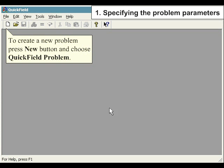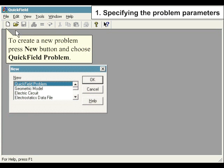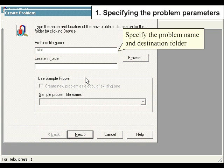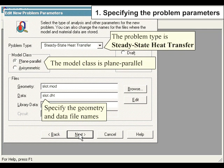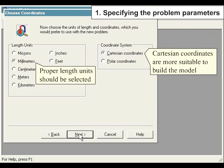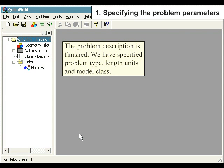To create a new problem, press New button and choose Quick Field Problem. Specify the problem name and destination folder. The problem type is Steady State Heat Transfer. The model class is plain parallel. Specify the geometry and data file names. Proper length units should be selected. Cartesian coordinates are more suitable to build the model. The problem description is finished. We have specified problem type, length units, and model class.